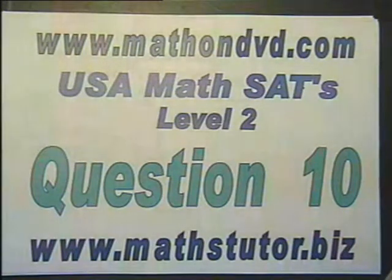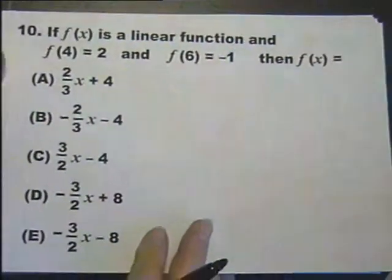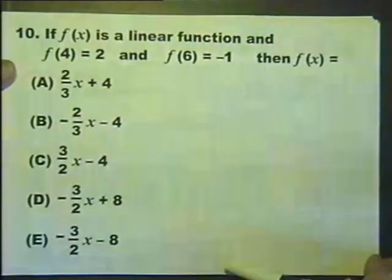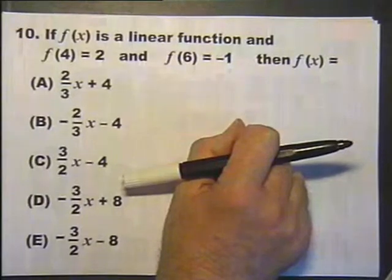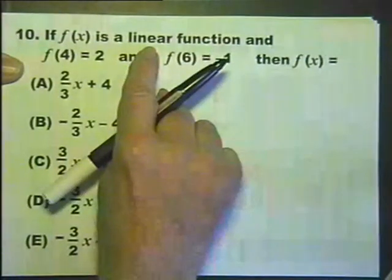Math SATs Level 2 Question 10. f(x) is a linear function. In other words, if you drew a graph of it, you'd get a straight line. That's what linear means.